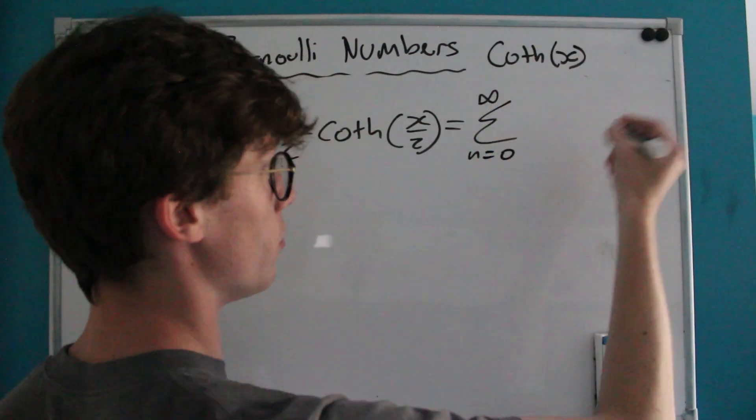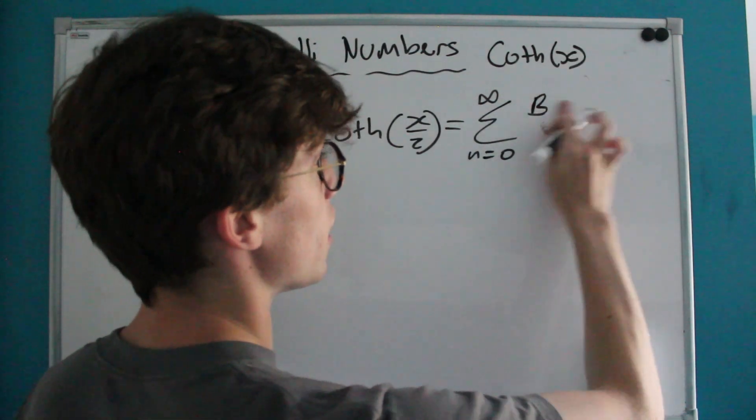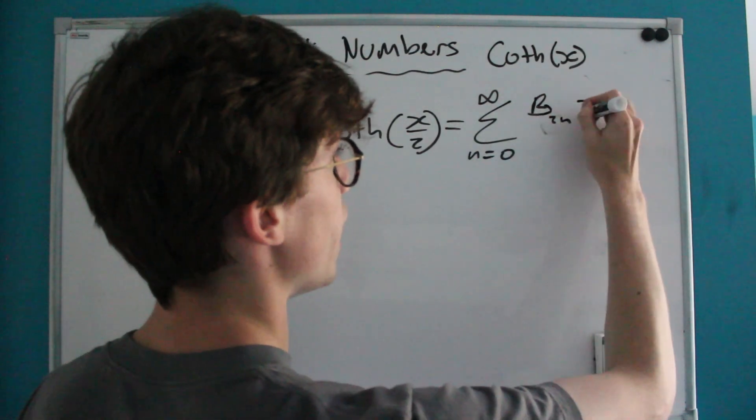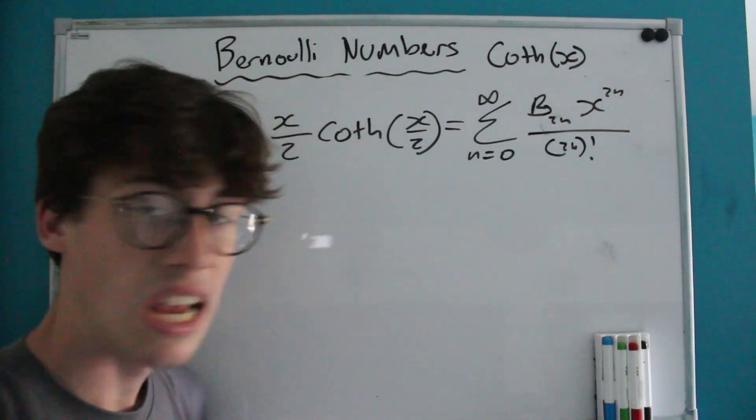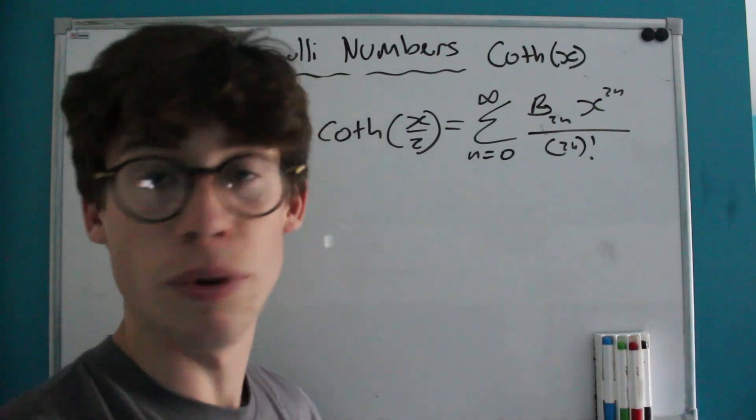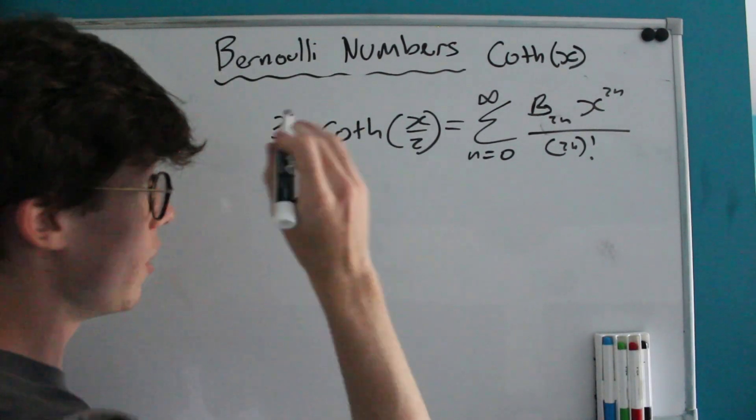How can we capture that neatly in a sum? Well, we'll sum from n equals 0 to infinity, and we'll do it instead of being for b_n, for b_2n, and similarly with X^(2n) divided by (2n)! because this allows us to skip all those odd Bernoulli numbers that are either 0 or that we subtracted out.